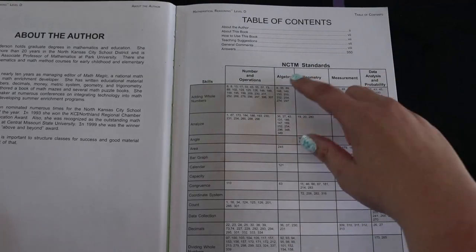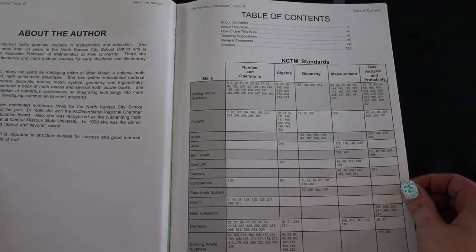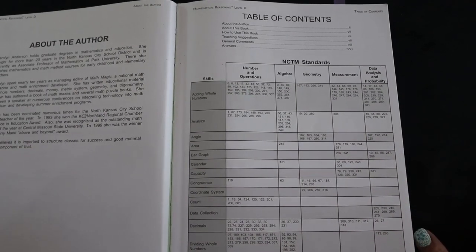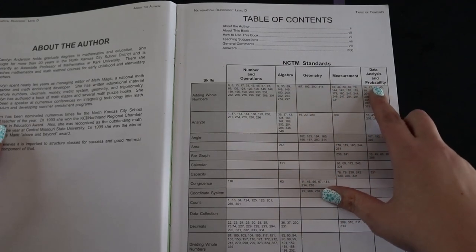Mathematical reasoning uses the NCTM standards. I'll have a link to explain more about those down in the description box. The standards pretty much are numbers and operations, algebra, geometry, measurement, data analysis, and probability.